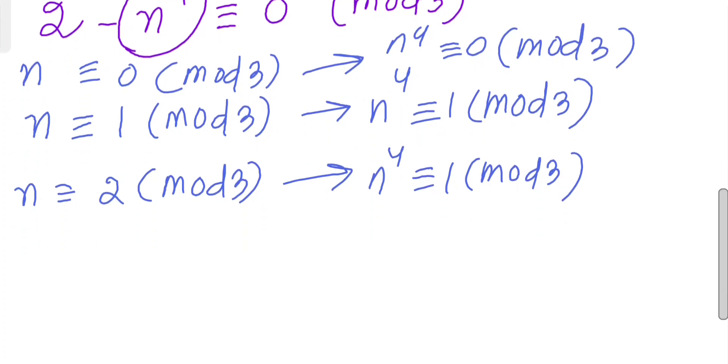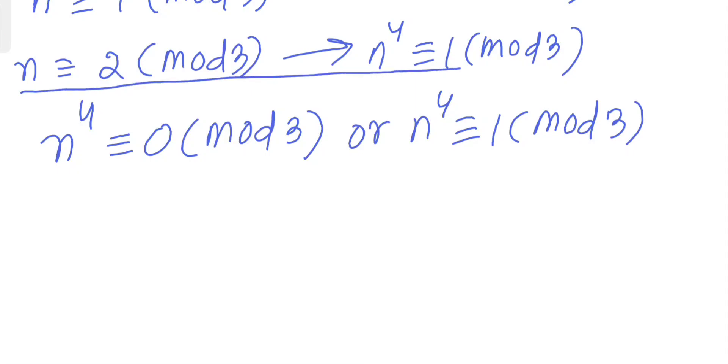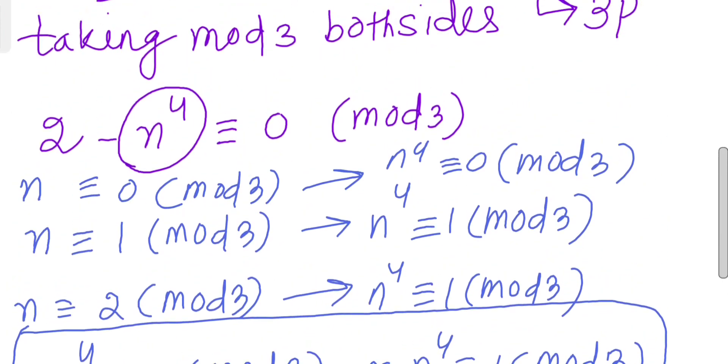So from here we found that n^4 is either 0 mod 3 or n^4 is 1 mod 3. But if you analyze this equation here: